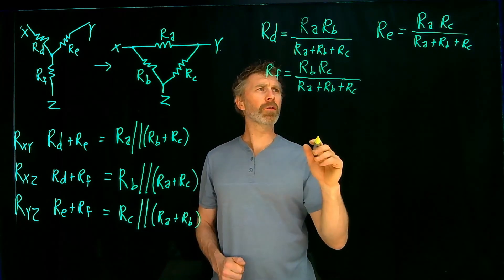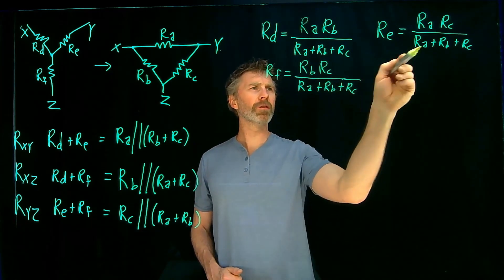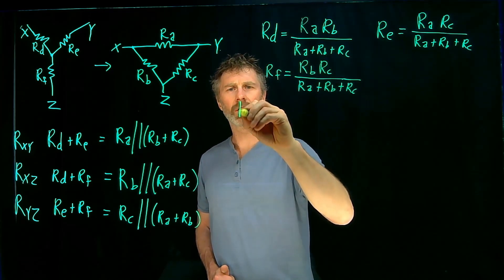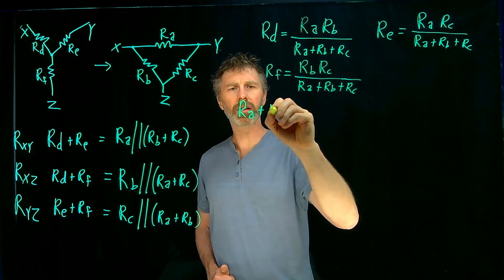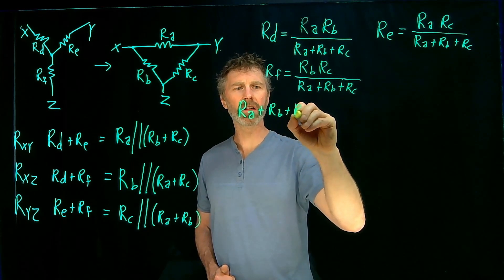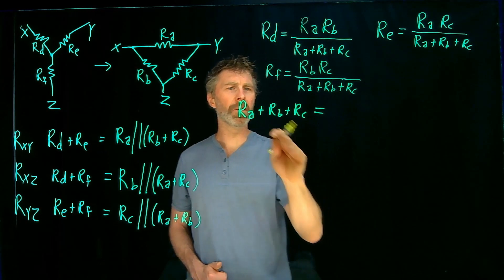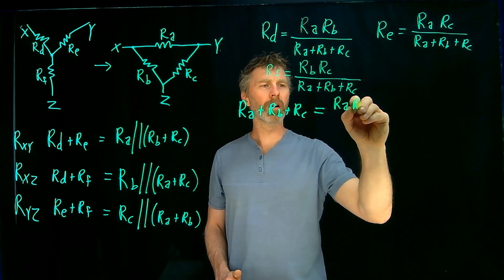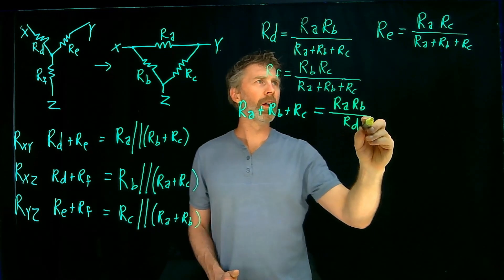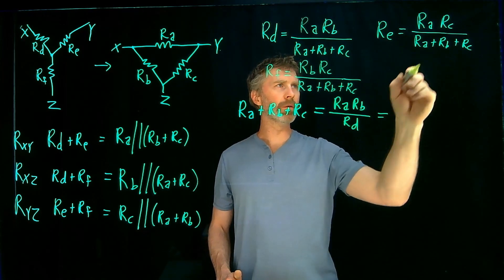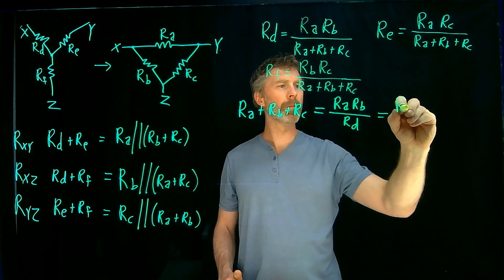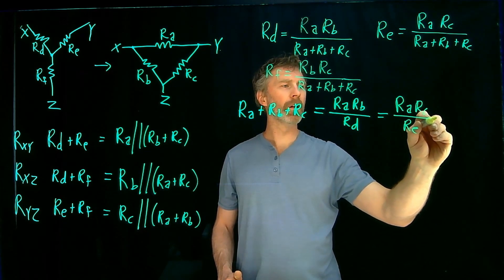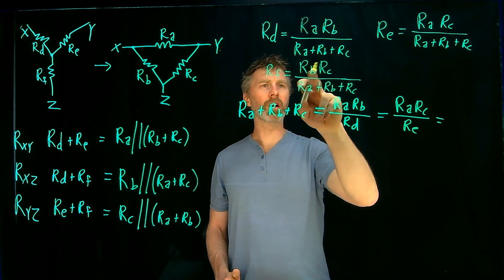Okay, to start off with, you can see we have a common denominator for each one of these. And if I rearrange each one of these three individual equations in terms of RA plus RB plus RC, I can see that that expression is equal to RA, RB over RD. And it's also equal to RA, RB over RD. And it's also equal to RB, RC over RF.